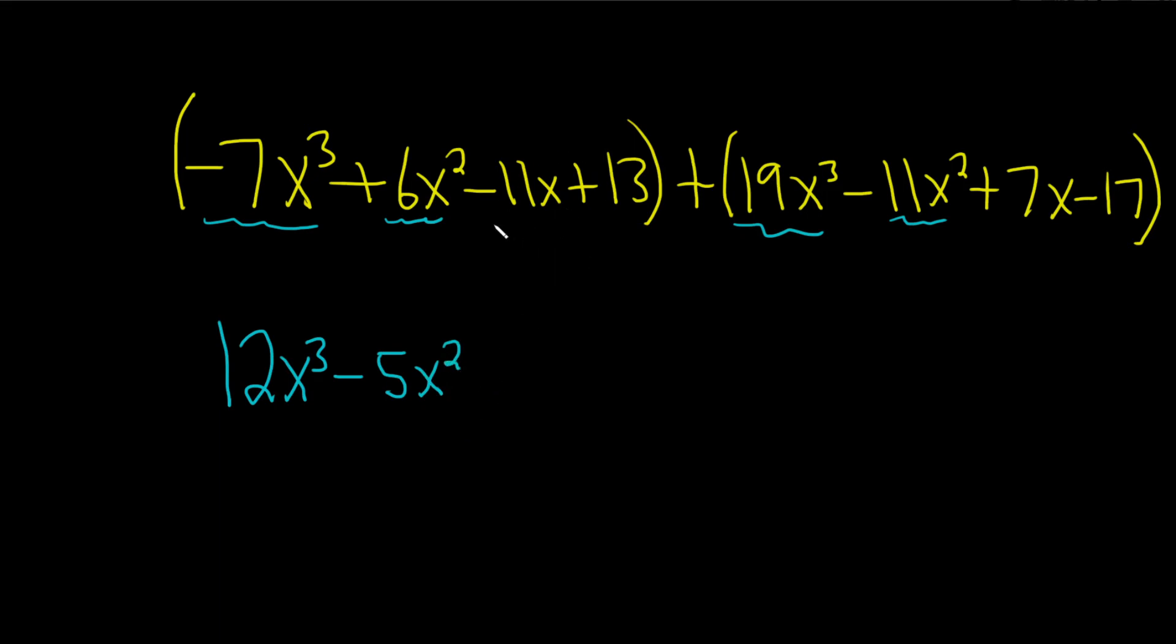Do the x terms. Negative 11x plus 7x. That's going to give us a negative 4x. And then 13 minus 17 is negative 4.